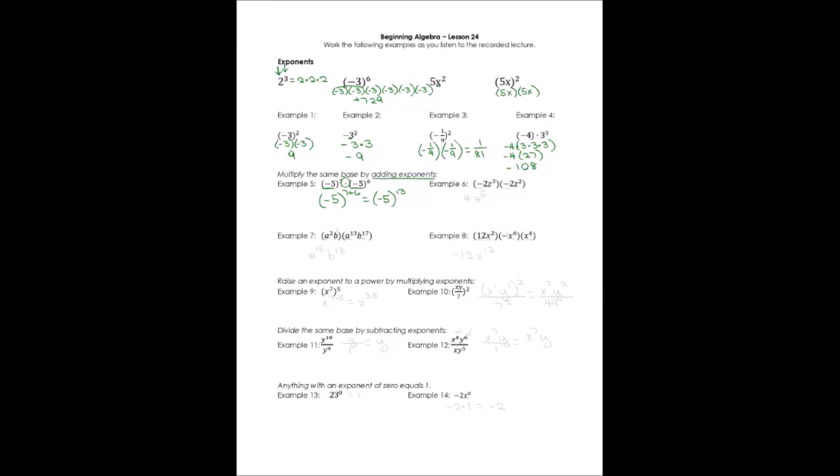Look at example 2. We need to figure out what is being raised to the exponent — it's only the z in each term. So we take the negative 2 coefficients and multiply them first: negative 2 times negative 2 gives us positive 4. Then z cubed times z squared is z to the power of 3 plus 2, which is z to the 5th. Our result is 4z⁵.